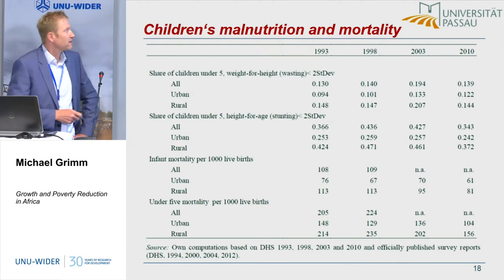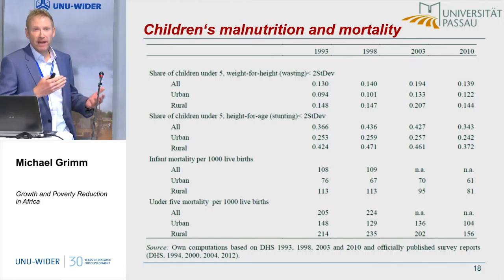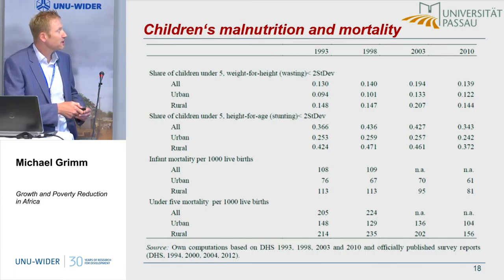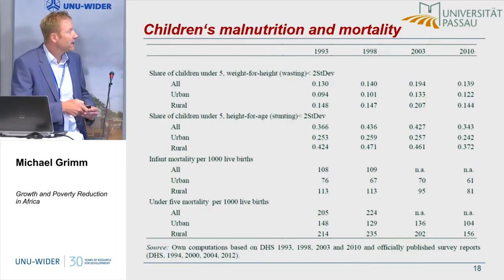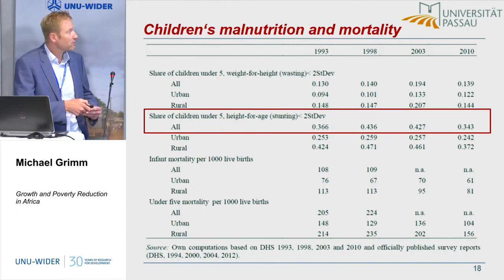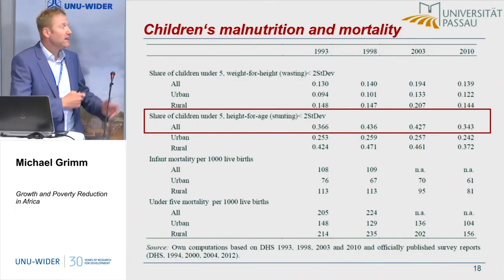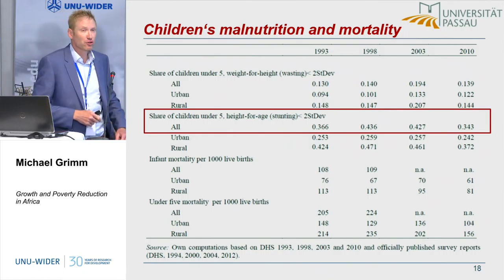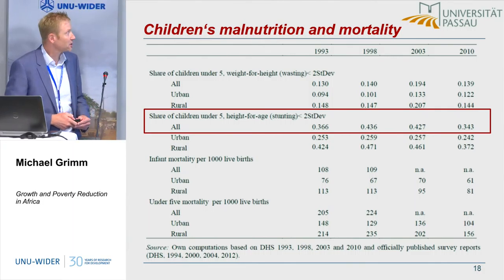You also see this in child malnutrition data. While malnutrition improved in many other countries, in Burkina Faso — at least in the earlier period — the share of children stunted increased strongly between 1993 and 1998. Even in 2003 it remained quite high, and only afterwards did it go down a bit. This doesn't allow a causal conclusion, but it suggests that food price inflation has also had effects on health, in particular children's health.